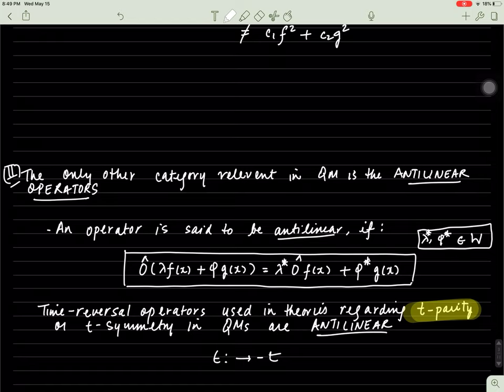The time reversal operators used in these theories regarding T-parity, for instance, are antilinear operators. What makes an operator antilinear? If an operator acts on a constant times a function plus another constant times another function, then essentially you get this result, where this is the complex conjugate of the constant and this is also the complex conjugate of the constant. If this equation is maintained, then the operator is said to be antilinear.